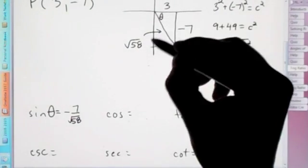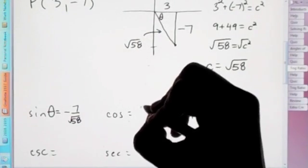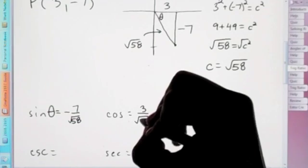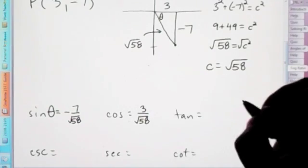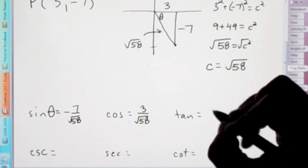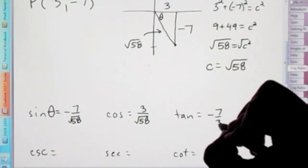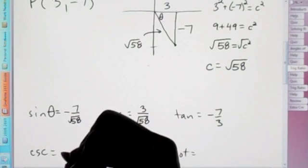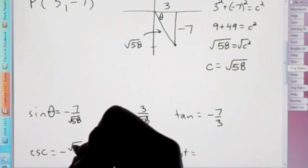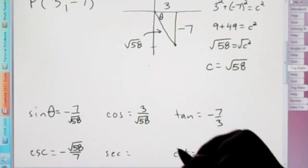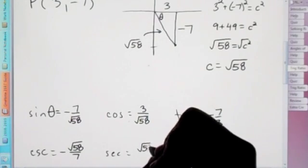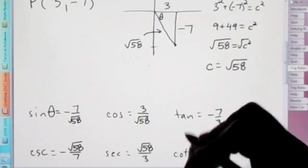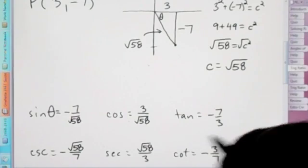Cosine is going to be adjacent over hypotenuse, so 3 over root 58. Tangent is going to be opposite over adjacent, so negative 7 thirds. And remember, cosecant is the flip of sine, so negative root 58 over 7. Positive root 58 over 3. Cotangent is tangent flip, so negative 3 sevenths.